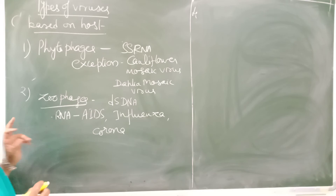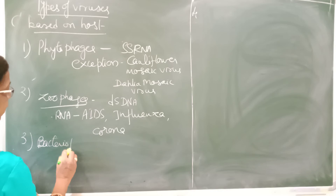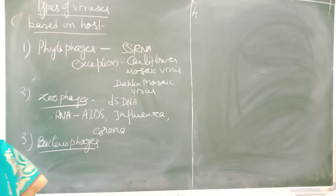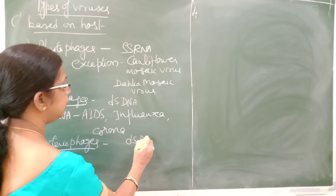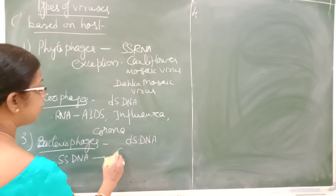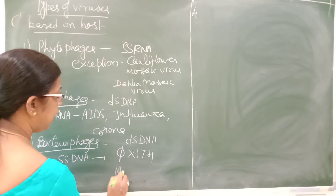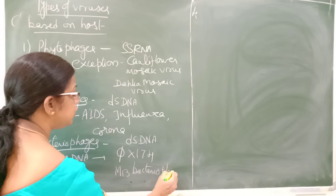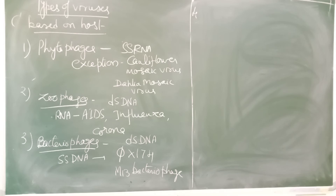The third type are bacteriophages — viruses which attack bacteria. Normally the genetic material is double-stranded DNA, but single-stranded DNA is also found in some, like the ΦX174 and M13 bacteriophages.